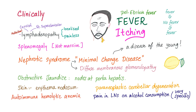The clinical picture of Hodgkin's disease includes painless lymphadenopathy, splenomegaly, fever and itching, nephrotic syndrome, obstructive jaundice, erythema nodosum, cerebellar degeneration, autoimmune hemolytic anemia, and pain in lymph nodes on alcohol consumption. This last sign is very specific — it's rare, it's not sensitive, but if you have it, it's a very specific clue that you have Hodgkin's disease.